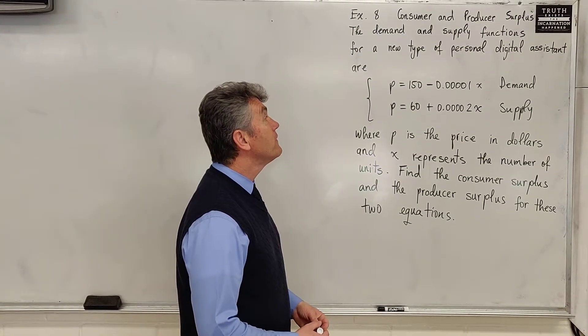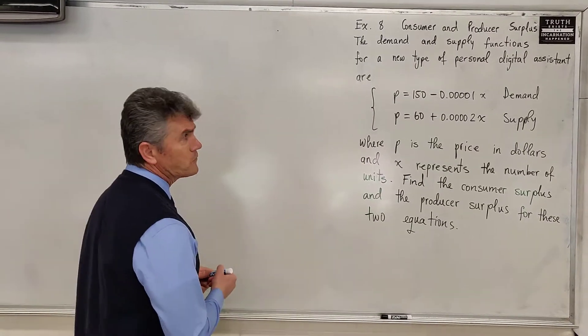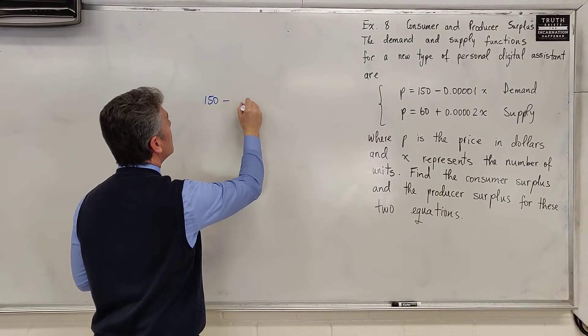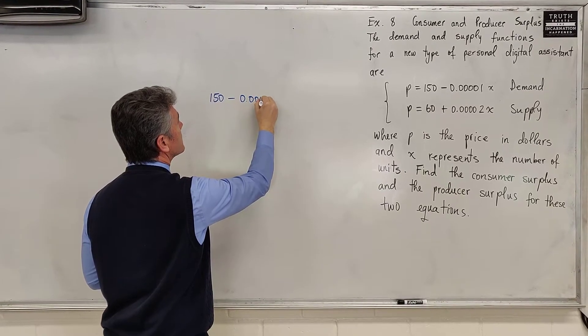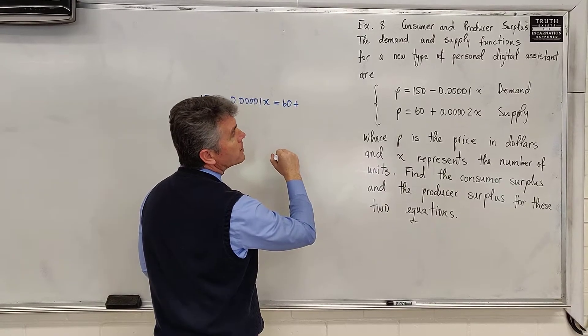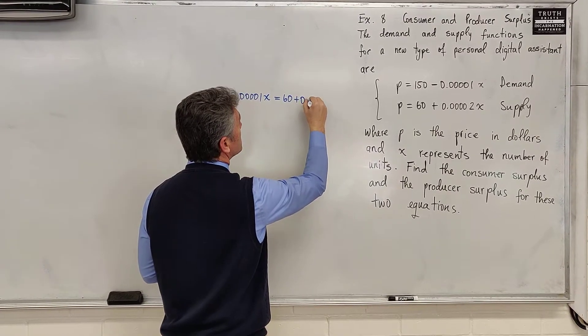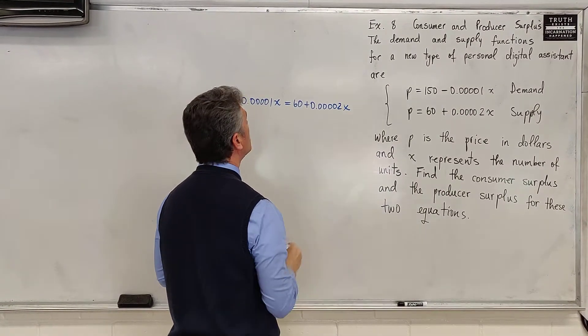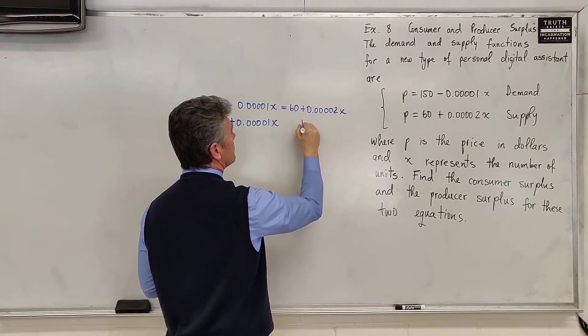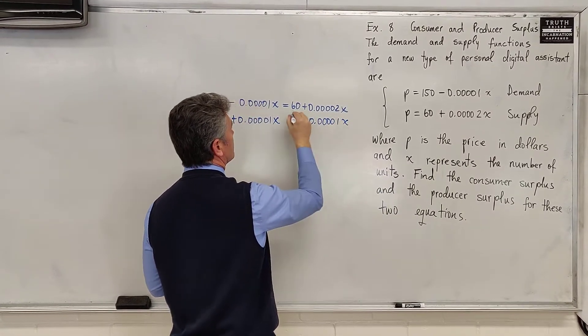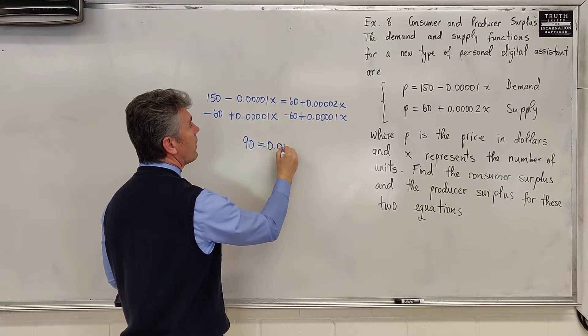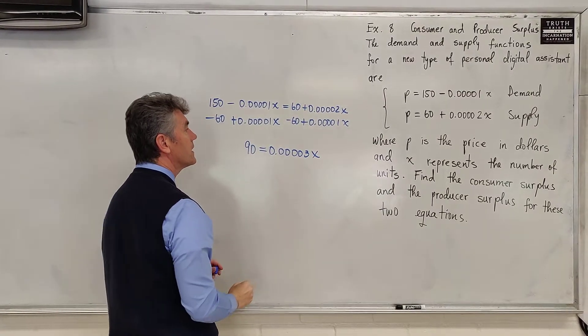The first thing we want to do is find the point of intersection of the demand curve and the supply curve using substitution. 150 - 0.0001x = 60 + 0.0002x. We're going to add 0.0001x to both sides and subtract 60 from both sides. On the left side we get 90, on the right side we get 0.0003x.